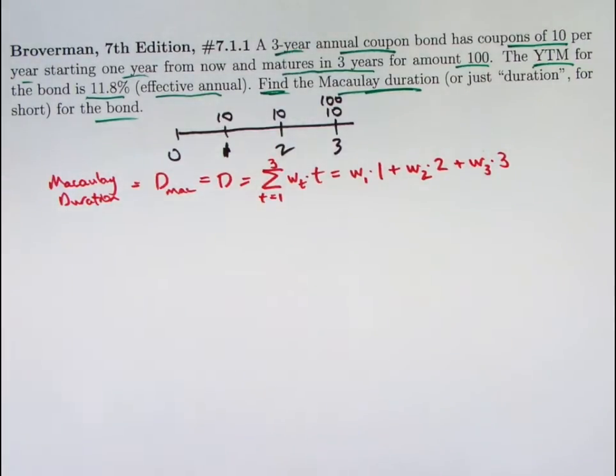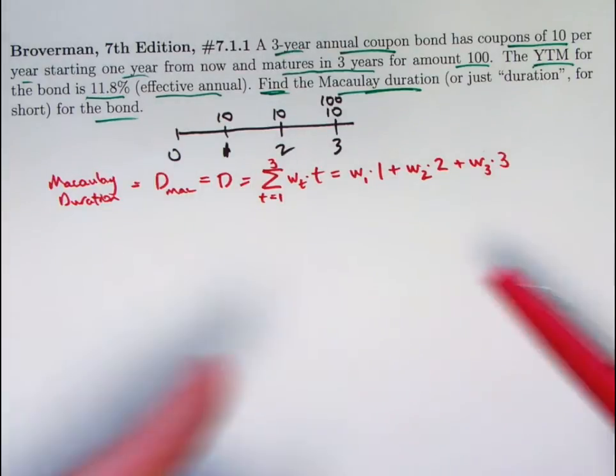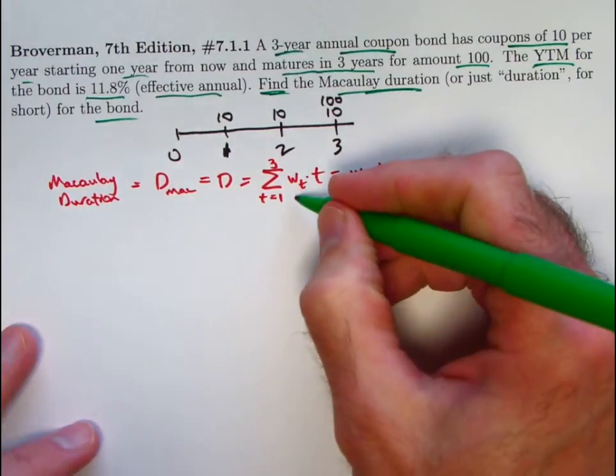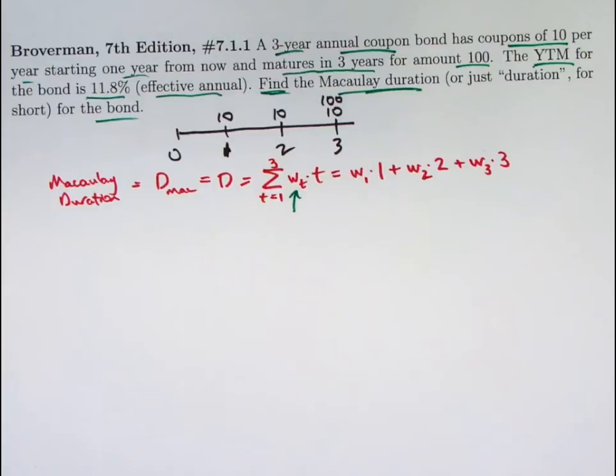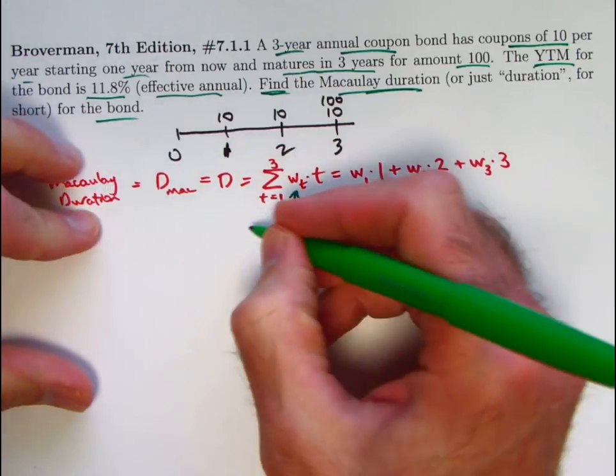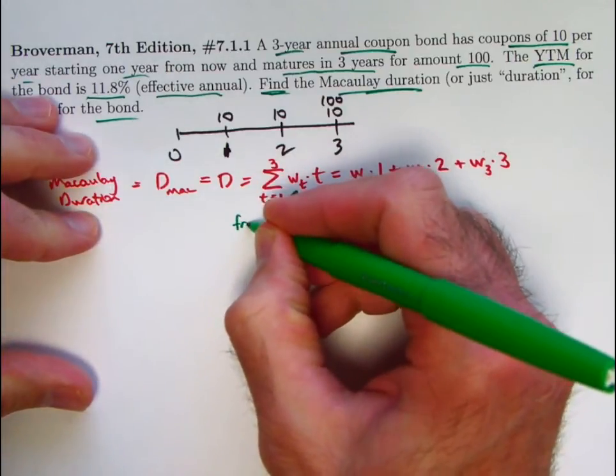A weighted average of times these Ws, W one plus W two plus W three, have to add up to one. These are all going to be numbers between zero and one. So this, in the end then, should be some number between zero and one. What do the WTs represent? And therefore, what does the entire Macaulay duration represent? Each WT represents the fraction,